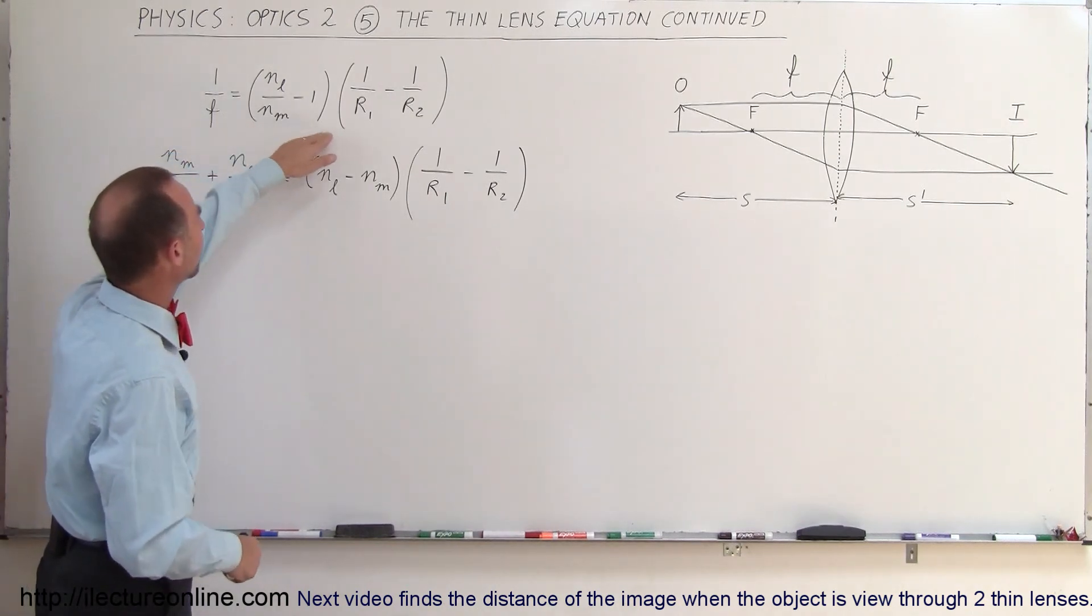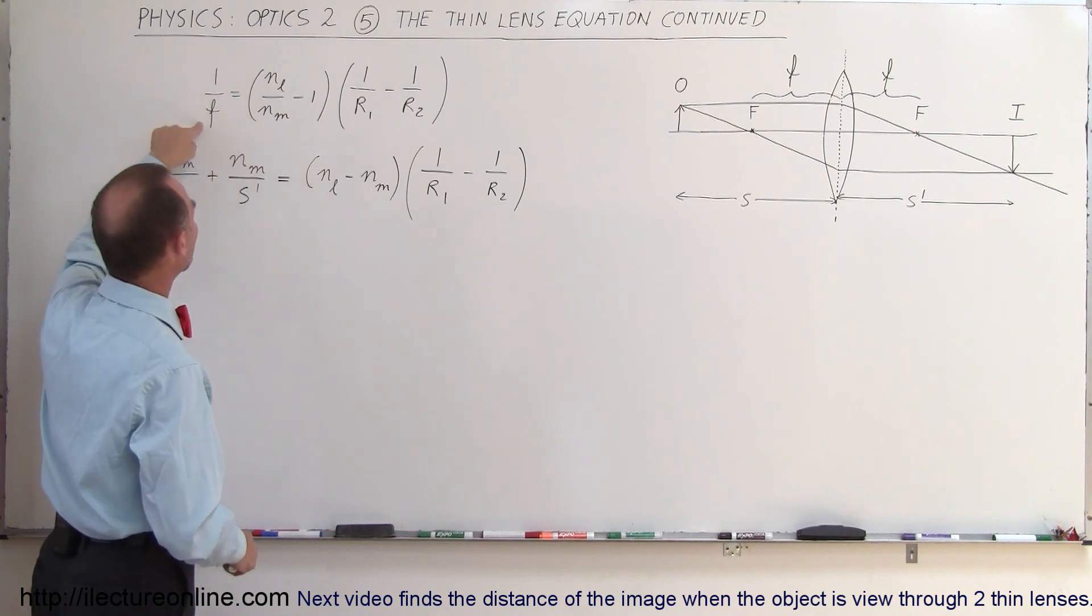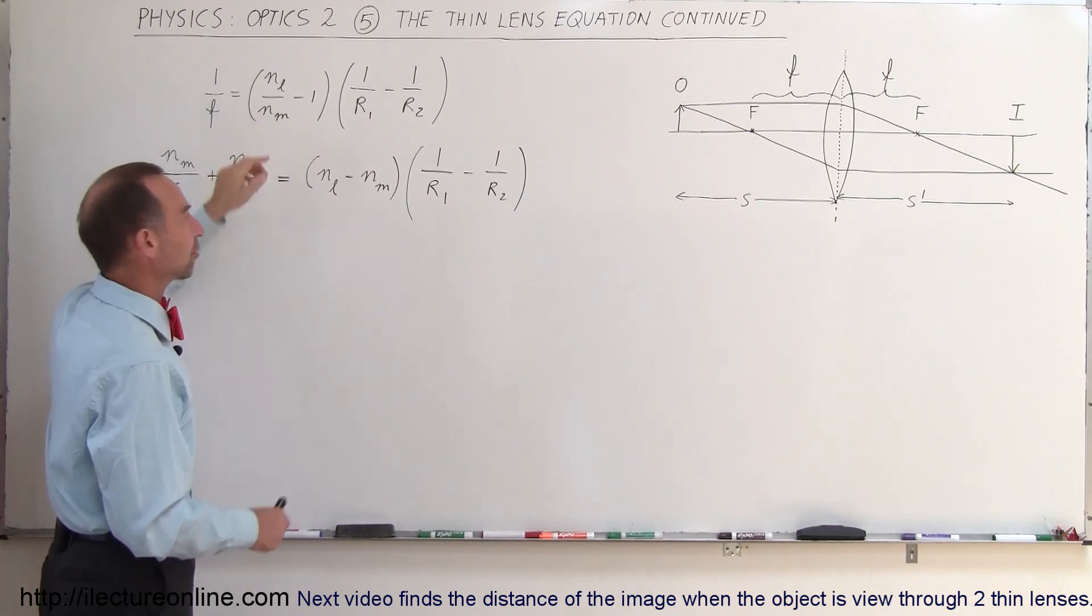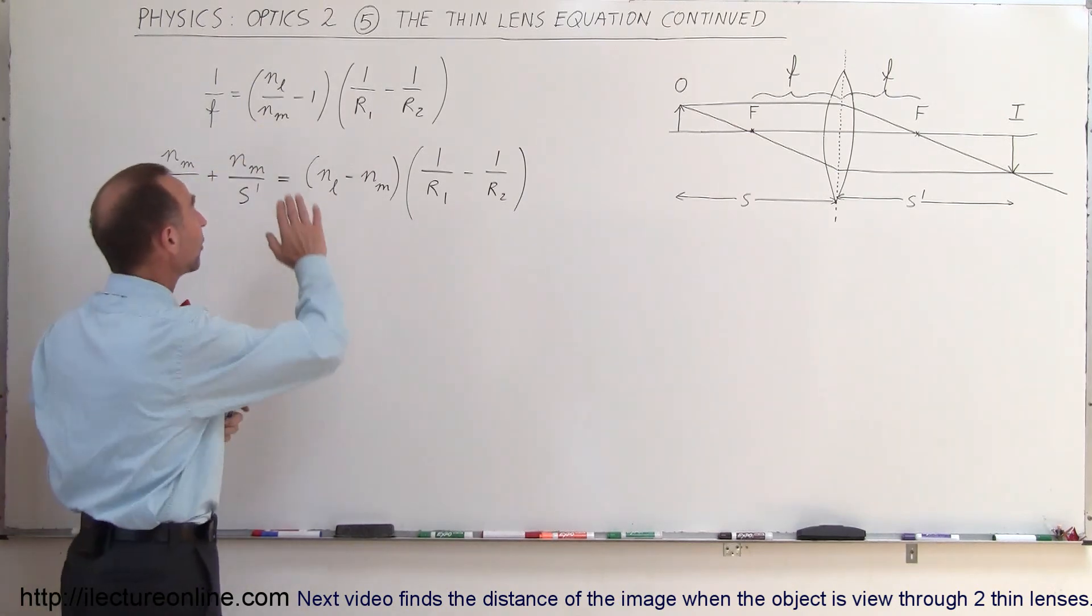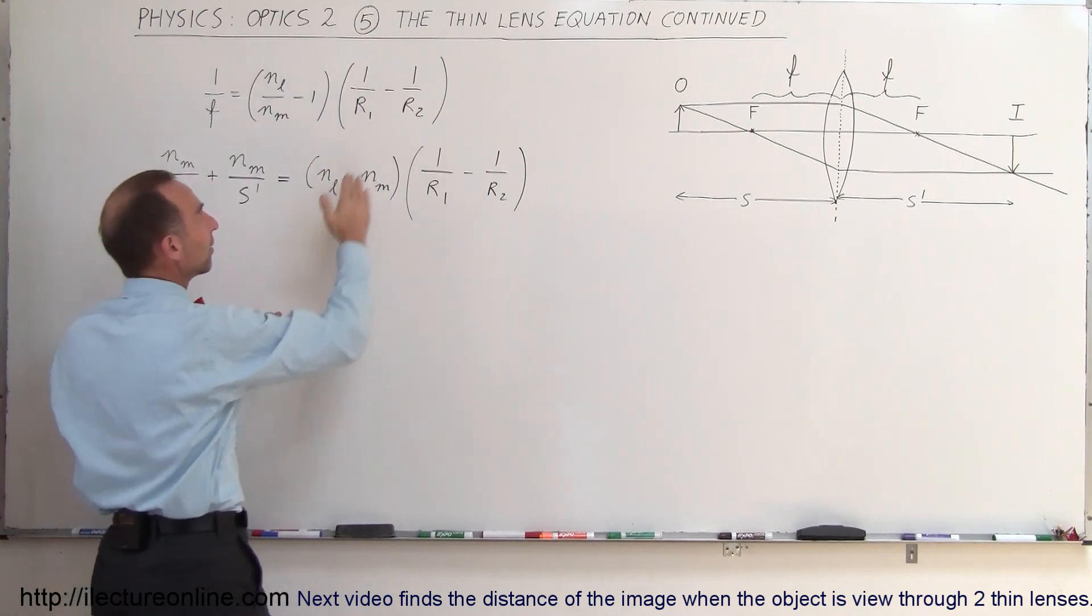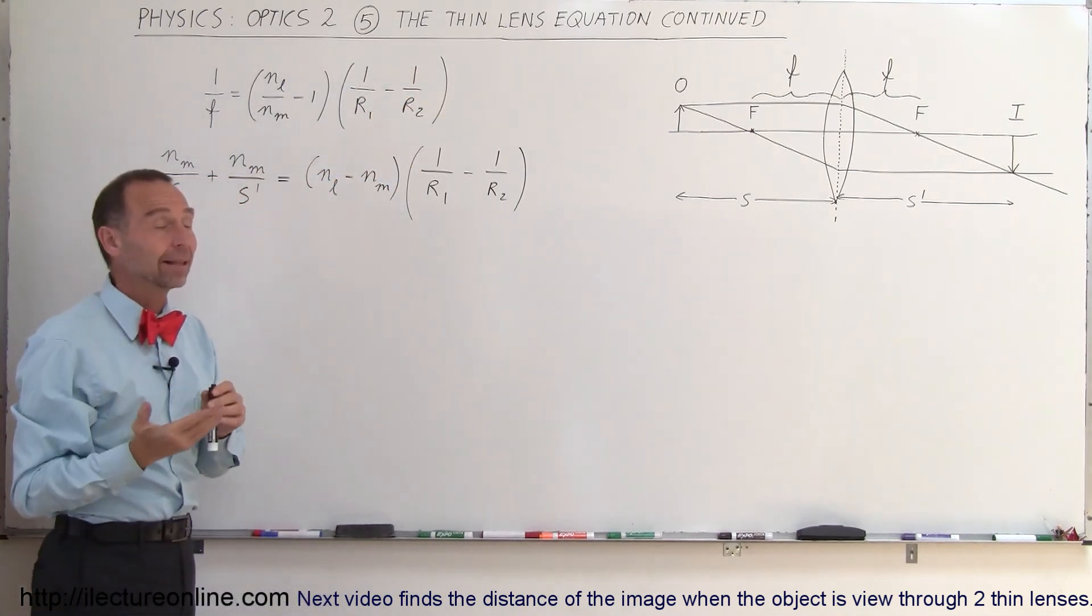This is the equation we've seen in previous videos, where 1 over the focal length equals the index of refraction of the lens divided by the index of refraction of the medium, minus 1, times 1 over the radius of the front side of the lens minus 1 over the radius of the back side of the lens.